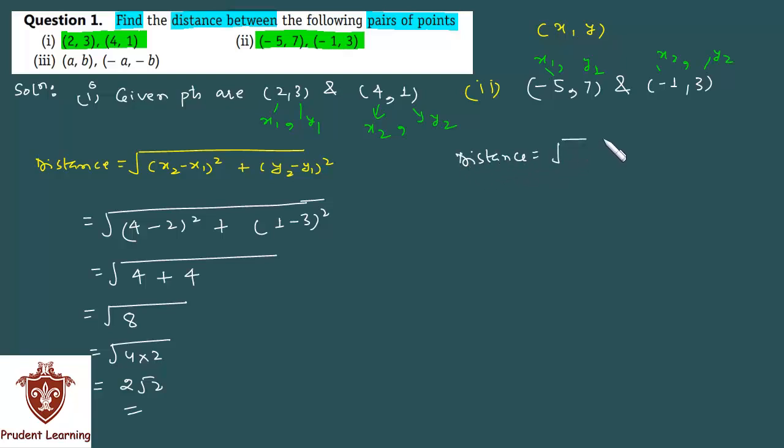In place of x2, you put minus 1 minus x1 which is minus 5, and square the whole thing. Plus, in place of y2, you write 3 minus y1 which is 7, again square this as well.